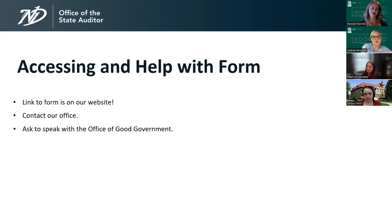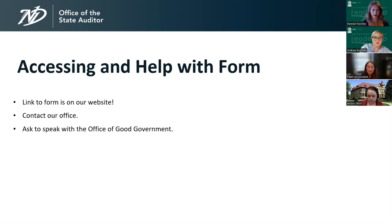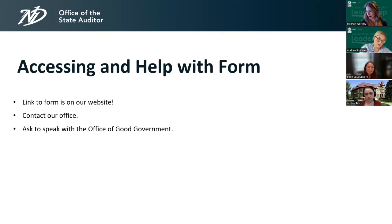The link to the financial report form is listed on the State Auditor's website under the local government reports tab, under the subcategory of forms. If you have any questions, call the office and ask to speak with the Office of Good Government — they will help you. If they don't know the answer, they'll find it. This presentation is meant to be a high-level overview, and no question is too small — don't be afraid to call.